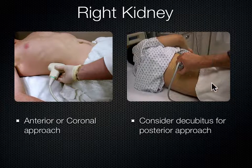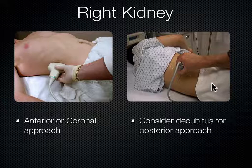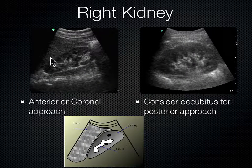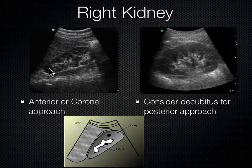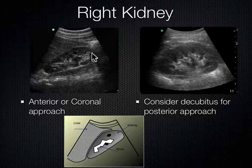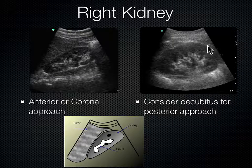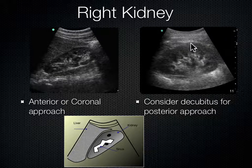If you can't get a good view anteriorly or coronally, you can roll the patient into left lateral decubitus — decubitus means on their side — and look between the ribs from a posterior approach. From the anterior or coronal approach we see the liver as our window to the kidney; going more posteriorly we see the psoas muscle behind the kidney, right on top of the spine. The anatomy from posterior to anterior is: spine, psoas, kidney, liver. The upper pole is more toward the head, then the mid pole, then the lower pole. In the decubitus position, the kidney can be as close as 2 centimeters deep to the skin on the posterior approach.